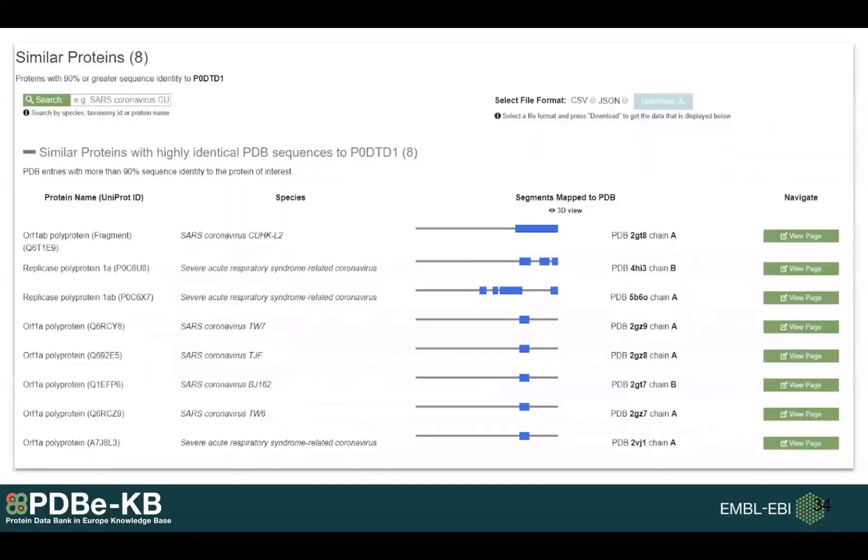Finally, we have a section for similar proteins. In the case of coronavirus, what we can show here is, are there any other UniProt accessions? So this is the UniProt accession of the coronavirus protein. Are there any other UniProt accessions which have PDBs mapped to them that are at least 90% identical to any PDBs mapped to this one?